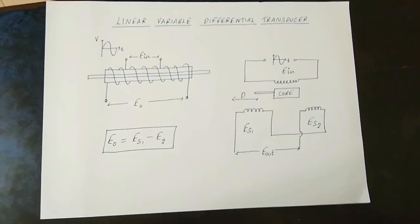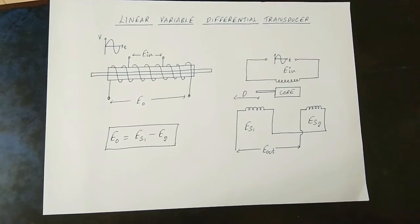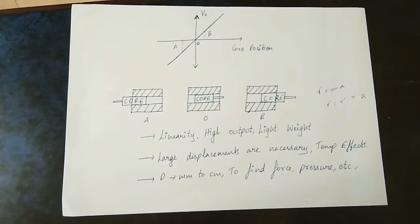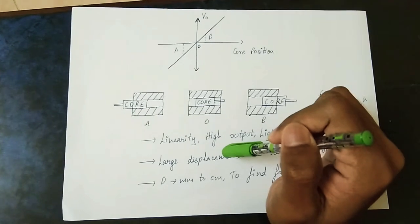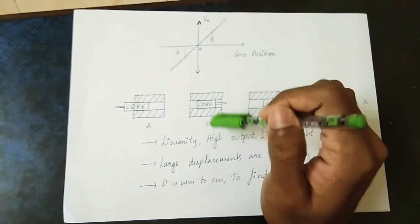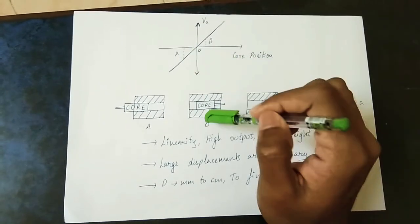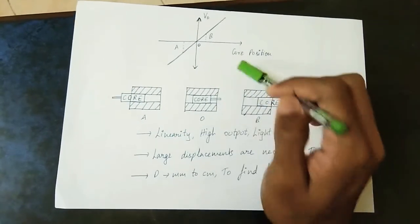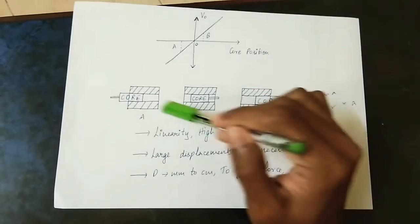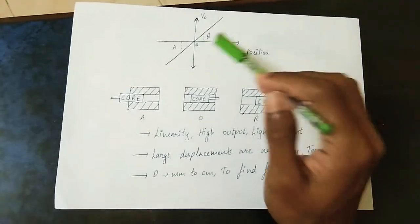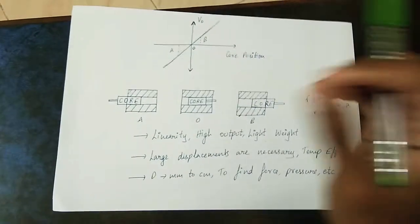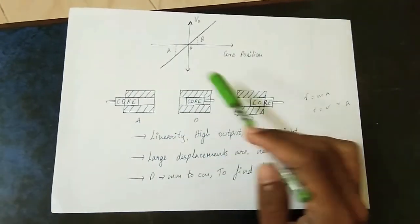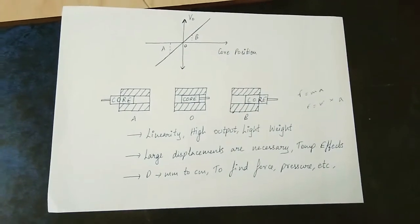If you have a graph, you can plot the voltage and the core position. The core position gives the output voltage. When the core is on the left side, ES1 is dominant. When the core is on the right side, ES2 is dominant. The value 0 corresponds to the center position — the difference is 0 at center position.